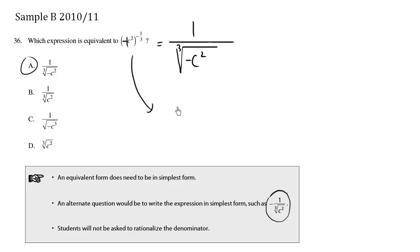So let's try that. This here is equivalent to negative 1 to the negative 1 third, times c squared to the negative 1 third. Let's see what happens here.